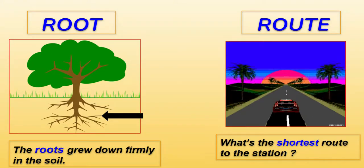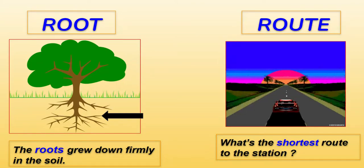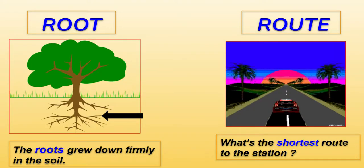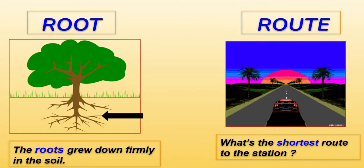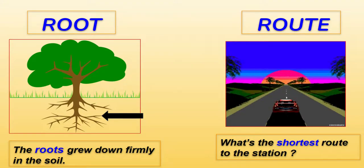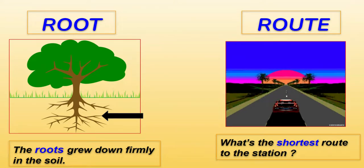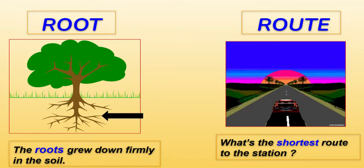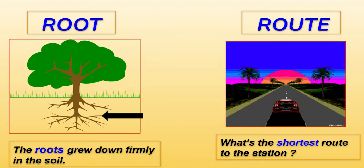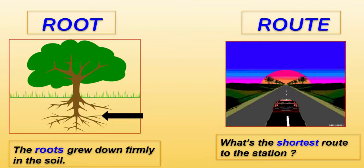R-double-O-T is root — the root of a plant. 'The root grew down firmly in the soil.' R-O-U-T-E is route — a way: 'Please take this route to reach home quickly.' 'What's the shortest route to the station?' These sentences help clarify which spelling is being used.